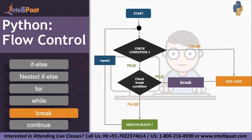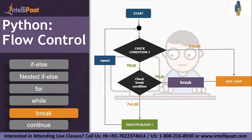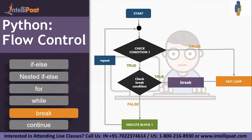Now let's learn about the break statement. The break statement is used to break out of the loop at a certain condition. In the flowchart: start, check the condition — if the condition is true, then check the break condition. If the break condition is false, execute block one and repeat the loop. If the break condition becomes true, break the entire loop and exit.